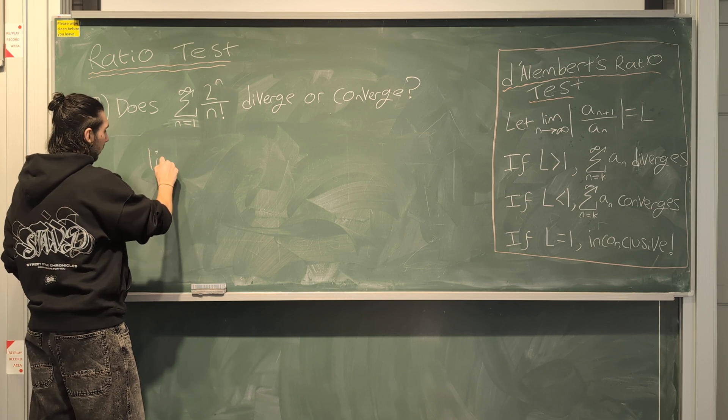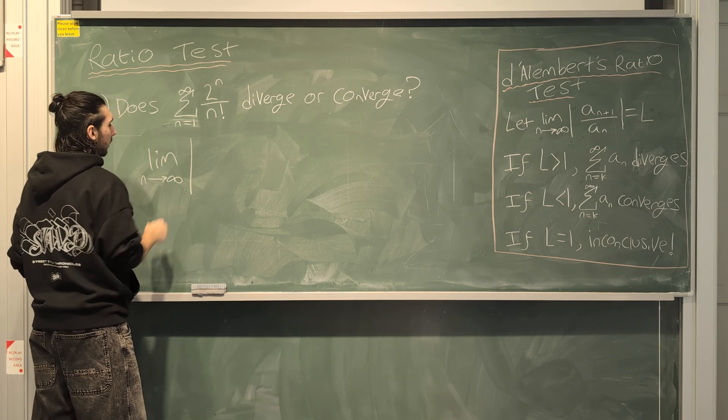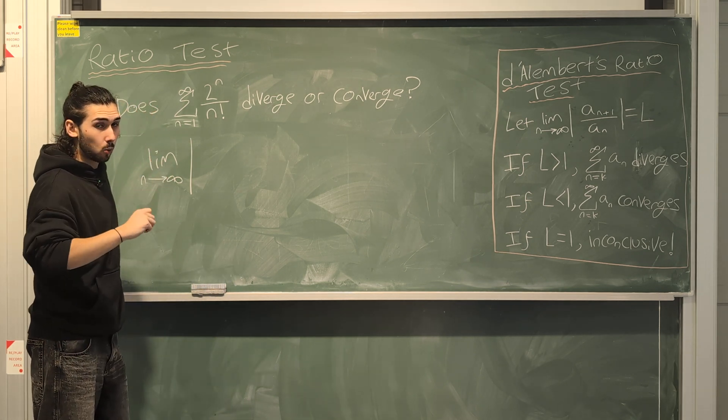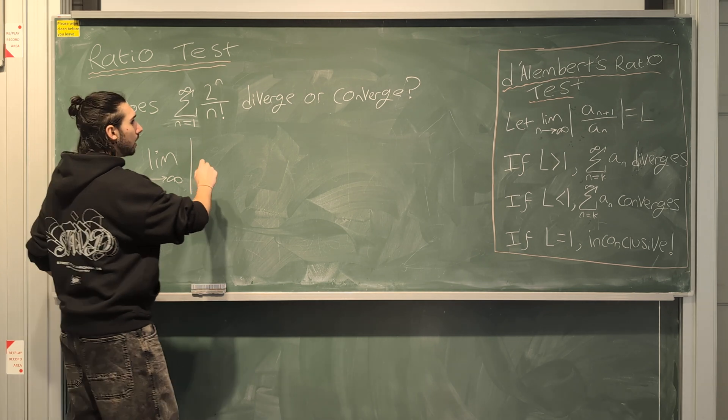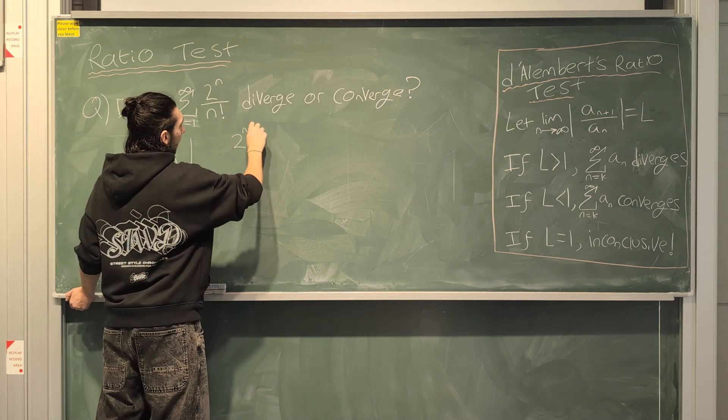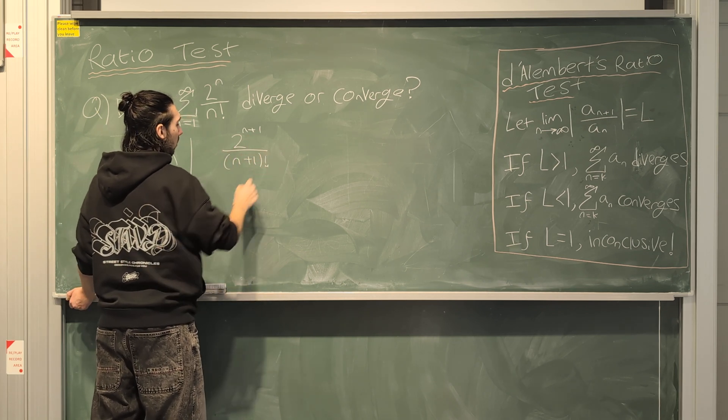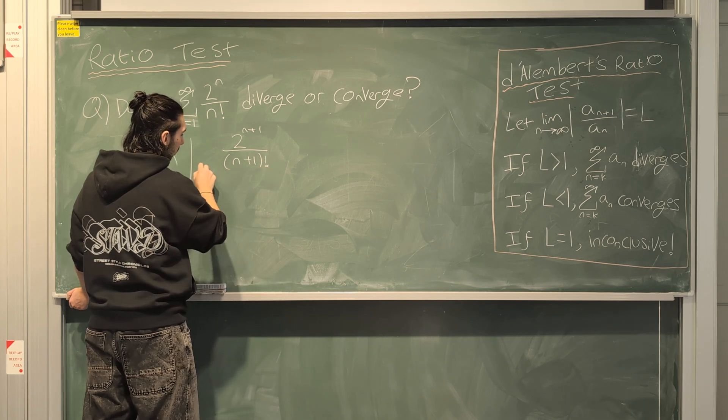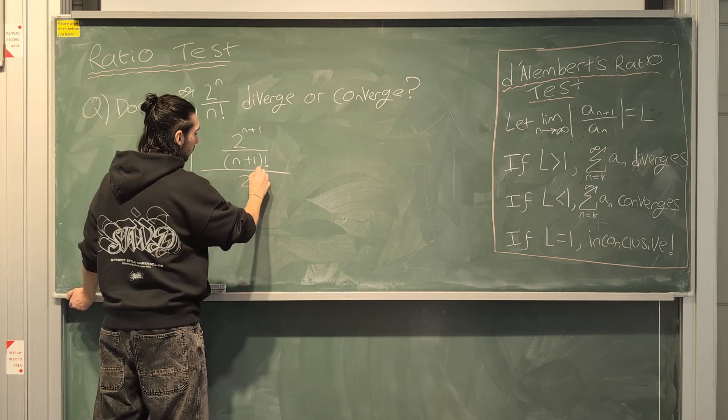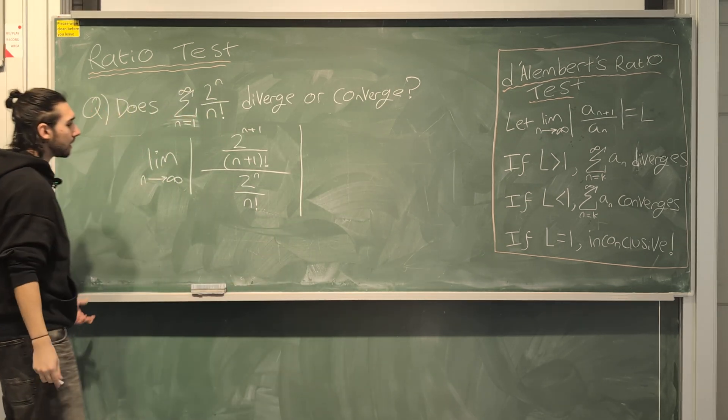So what we do, as always with the ratio test, is we want to take the limit as n goes to infinity of the absolute value of the n plus 1th term divided by the nth term. So the n plus 1th term here would be 2 to the power of n plus 1 divided by n plus 1 factorial. All of that divided by the nth term, which is 2 to the n over n factorial.